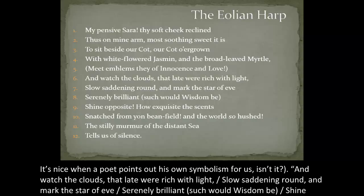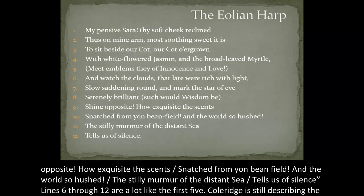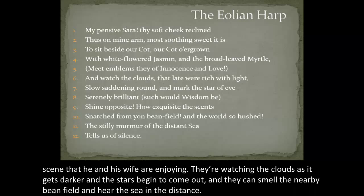Lines six through twelve are a lot like the first five. Coleridge describes the scene he and his wife are enjoying: they're watching the clouds as it gets darker and stars begin to come out, smelling the nearby bean field and hearing the sea in the distance. The passage reads: 'And watch the clouds that late were rich with light, slow saddening round, and mark the star of eve, serenely brilliant — such as wisdom be — shine opposite. How exquisite the scents snatched from yon bean field, and the world so hushed, the stilly murmur of the distant sea tells us of silence.'